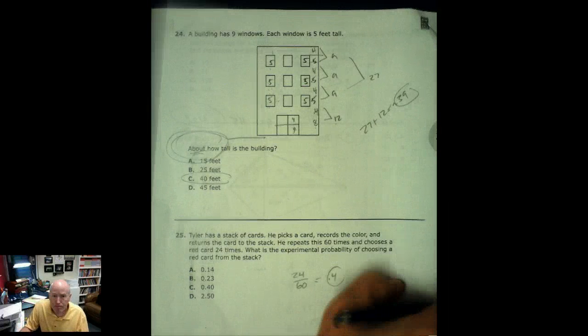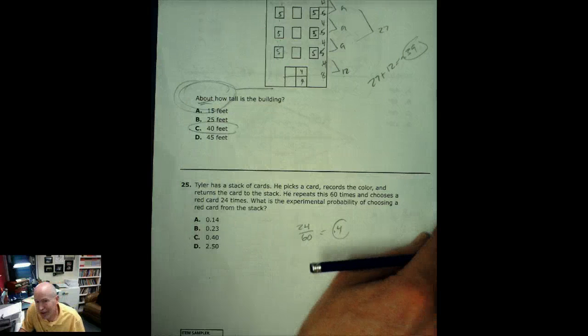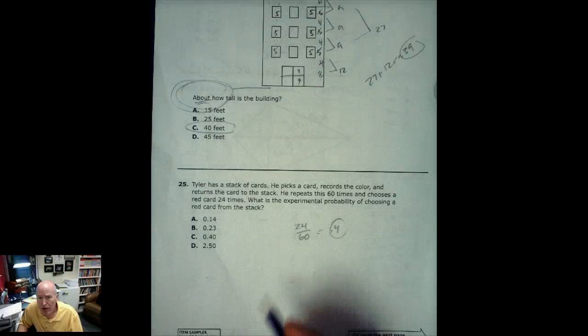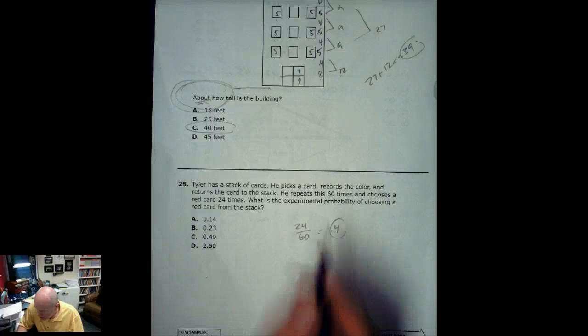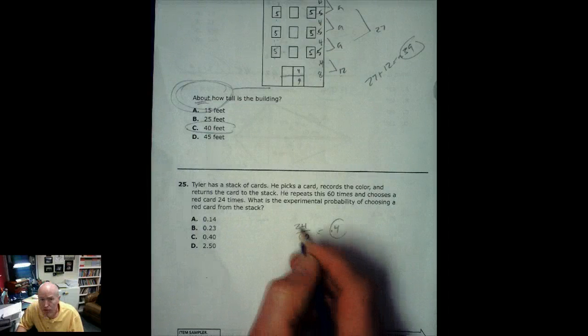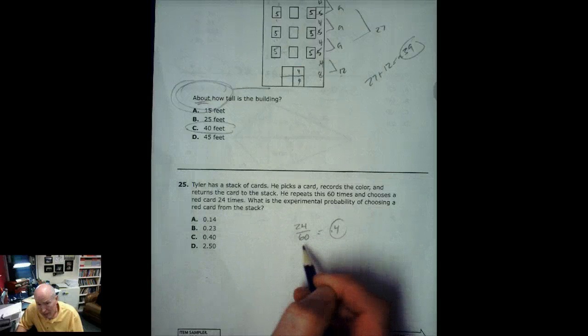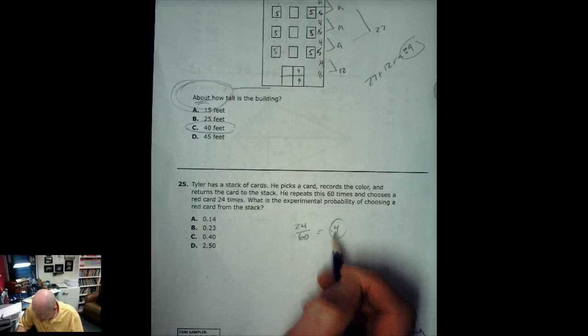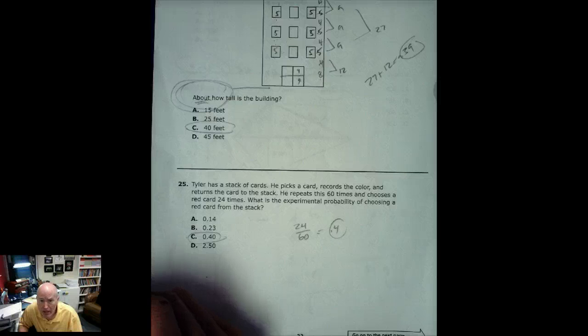Last one. Tyler has a stack of cards. He picks a card. By the way, I hate this question. I think it's poor. He picks a card and records the color and returns the card to the stack. He repeats it 60 times, choosing a red card 24 times. So he drew 60 cards and he drew 24 red. Well, we know that 24 over 60 really means 24 divided by 60, that fraction. So if I do that, I get a .4, which is the correct answer. So that is the probability expressed as a decimal.